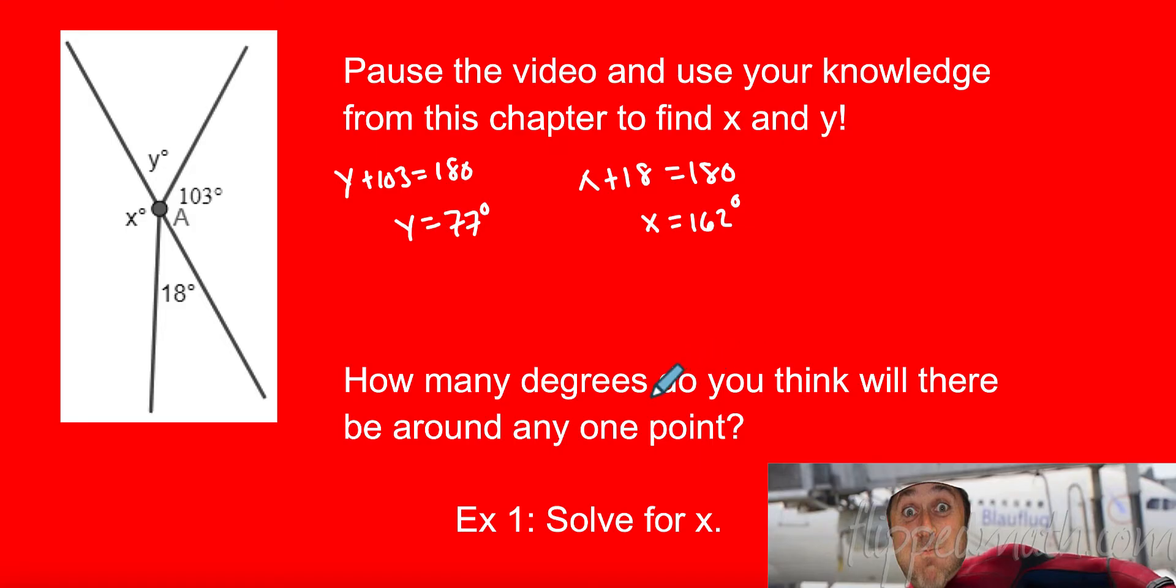All right, so how many degrees do you think there will be around one common point? So this is a common point. How many degrees around here? Well, let's add them up. 103 plus 77 plus 162 plus 18. Well, that's 180 plus 180. That's 360 degrees. That is a big, new, special angle. Anytime we have one point, there's going to be 360 degrees around that one point.